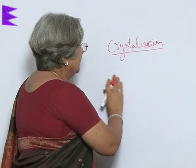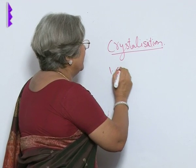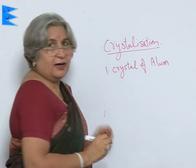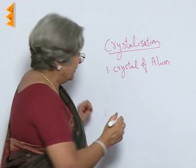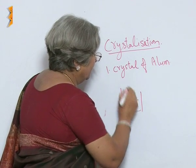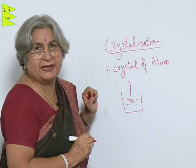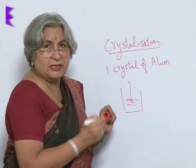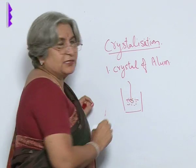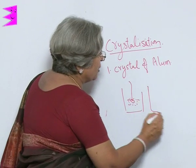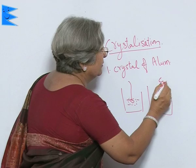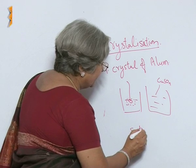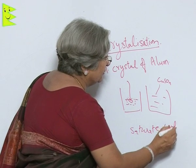By this method we can make crystals of alum. A saturated solution of alum is prepared in a beaker. Then we hang a small crystal of alum in it and heat it. Slowly the crystal will increase in size because all the alum dissolved in water will get deposited on it. Similarly, you take copper sulphate solution, heat it until it becomes a saturated solution, and then it will change to crystals.